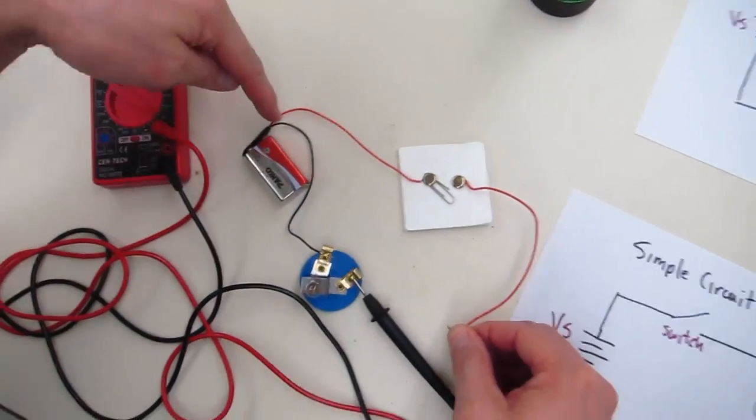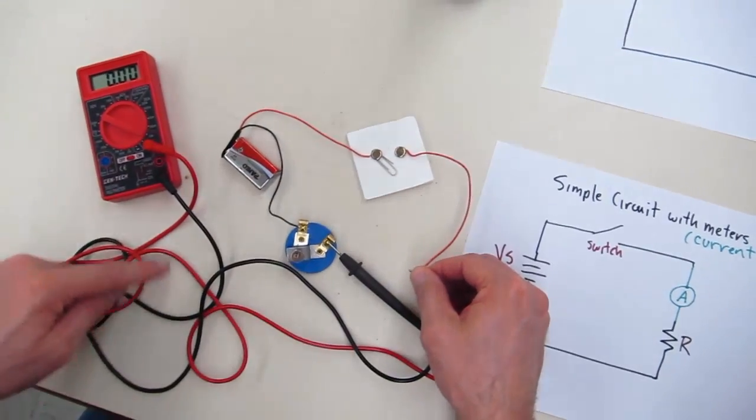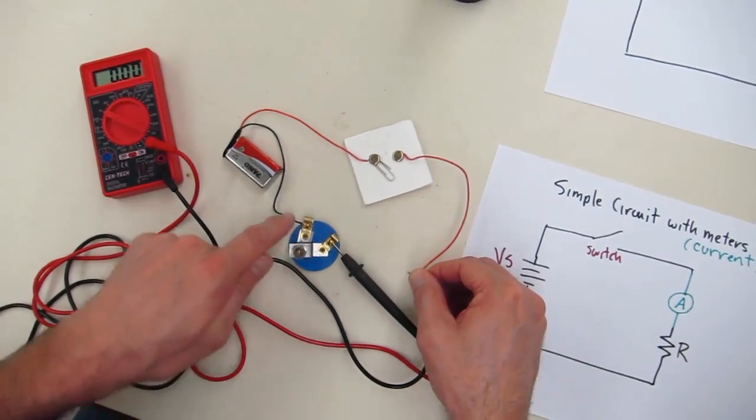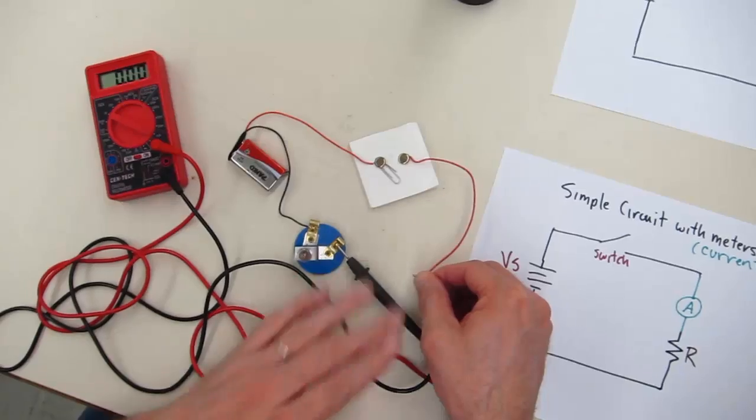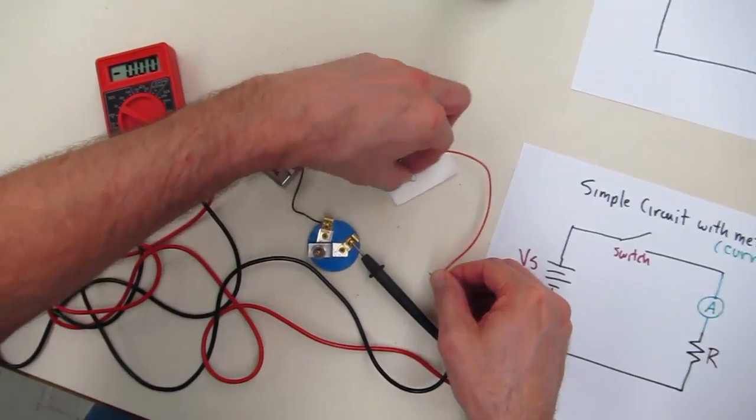So the way our circuit goes is out of the power supply, through the switch, out of the switch, out through the meter, out of the meter, back to the bulb, and out of the bulb, back to the power supply. So now our circuit includes the meter. So let's go ahead and close this circuit.